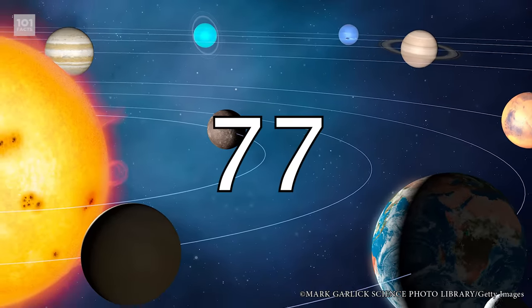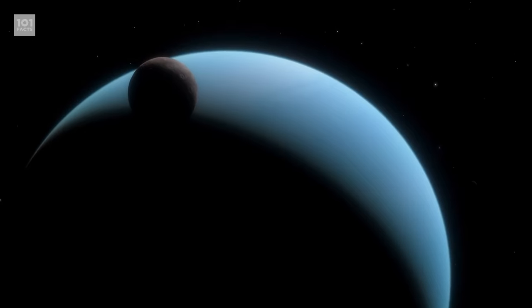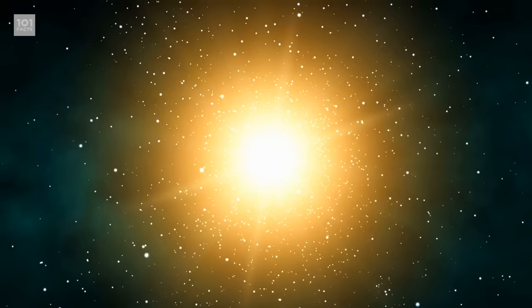A day on Uranus is shorter than a day on Earth, with one axis turn taking around 17 hours. A year on Uranus, though, is what the kids would call well long, equating roughly 84 years on Earth. Yep, that's how long it takes for Uranus to orbit the sun.